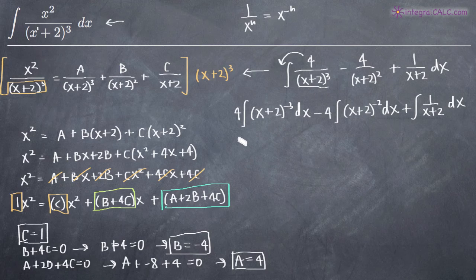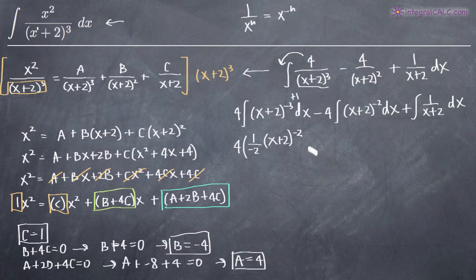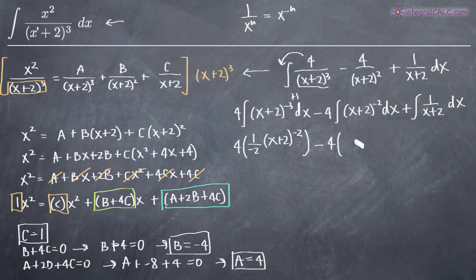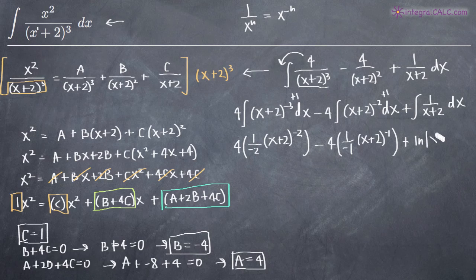Now we integrate. For the first integral, we add 1 to the exponent: negative 3 plus 1 gives negative 2, and we divide by the new exponent, giving 4 times 1 over negative 2 times x plus 2 to the negative 2. The derivative of x plus 2 is just 1 by chain rule, so we divide by 1. For the second, adding 1 gives exponent negative 1, so we get minus 4 times 1 over negative 1 times x plus 2 to the negative 1. And the integral of 1 over x plus 2 is the natural log of x plus 2, plus C.